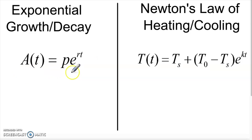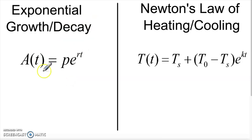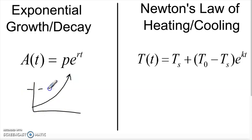A quick recap: exponential growth and decay — A = Pe^rt — is a basic formula that works perfectly for money and great for things that are decaying, since there's a natural floor at zero. But for growth it gets problematic if applied to the real world — it works for a while when there's plenty of room to expand, but runs into trouble when constraints appear, since it wants things to grow forever. Newton's Law of Heating and Cooling resolves this by taking the temperature difference and multiplying by an ever-decreasing exponential decay piece.